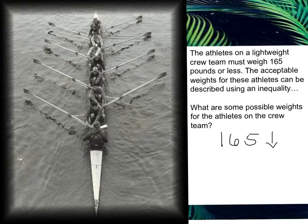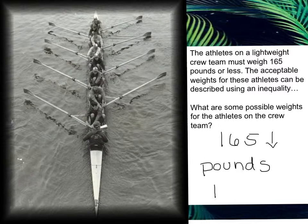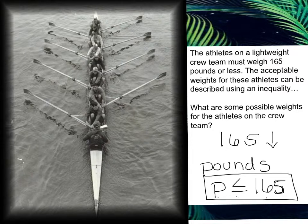We can write an inequality to represent this value instead of writing 165 and an arrow pointing down. What we could say is that the pounds for an athlete, we'll put P as pounds, has to be less than or equal to 165 pounds. So I just described what I wrote in words: pounds have to be less than or equal to 165. This could represent the weight needed for any athlete on the crew team. We'll discuss how I figured out which inequality to use and also demonstrate how to draw it on a number line and how to create an inequality from a number line.